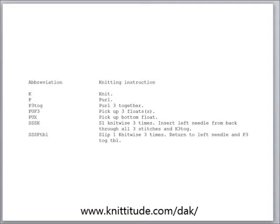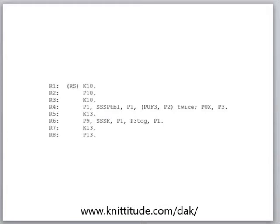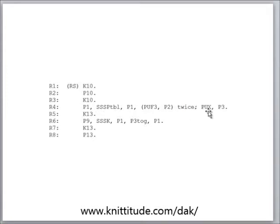And in fact, when I go into my text instructions for this, it says: knit 10 — I'm on the right side of the garment — purl 10, knit 10, purl 1, here's our knit through the back of the loop 3 stitches, purl 1, pick up 3 floats, purl 2, in parentheses twice, pick up a float, purl 3, etc.